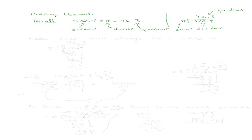We're going to live by one rule, and that is that the divisor has to always be a whole number. So let's say we want to do the division we did above — 370.4 divided by 8. In this example, my divisor is already a whole number, so I don't have to do anything special. I can just go ahead and divide.